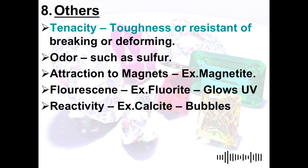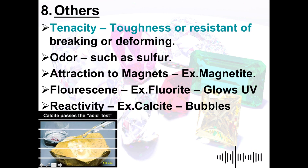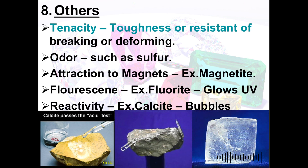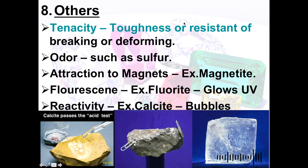There are also other properties used to identify minerals. Tenacity refers to the toughness or resistance of a mineral to breaking or deforming. Using the Mohs scale as reference, the hardest mineral is diamond and the softest is talc — tenacity describes how tough a mineral is.